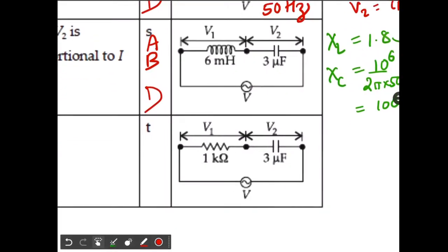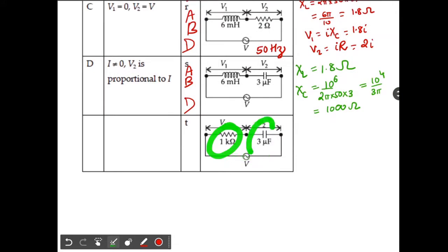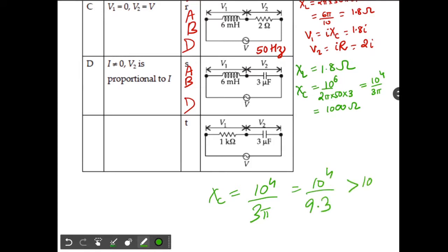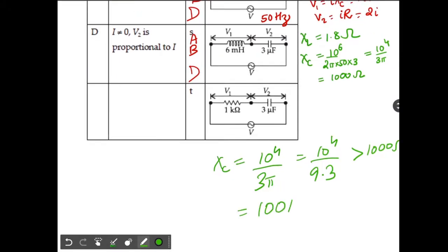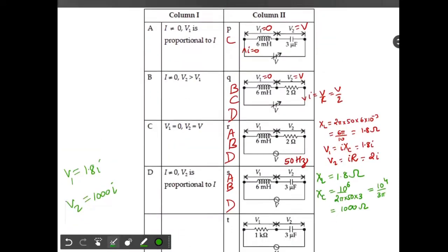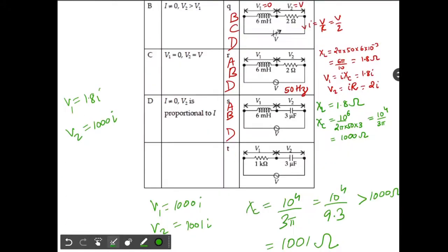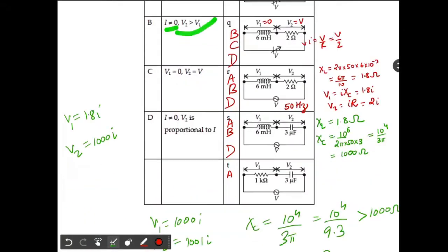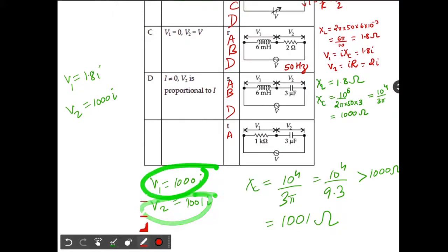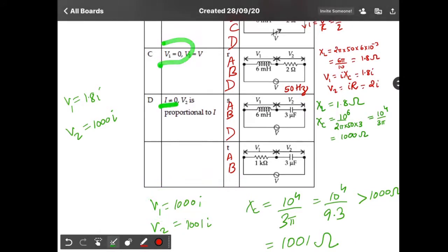For the fifth circuit we have a resistor and capacitor in series connected to an AC source. The resistor is 1000 ohms. XC is 10⁴/(3π) which is slightly more than 1000 ohms — approximately 1001 ohms. So V1 = 1000I and V2 = 1001I. Option A: V1 proportional to I — yes, correct. Option B: V2 greater than V1 — yes, correct. Option C: V1 = 0 — obviously no. Option D: V2 proportional to I — yes, correct. So the answer is ABD, and that is the final solution.